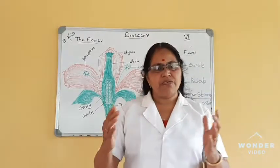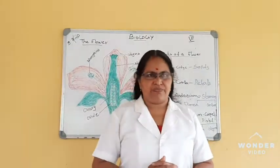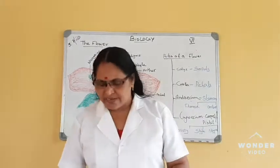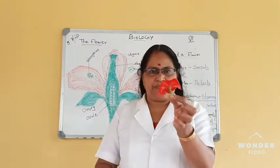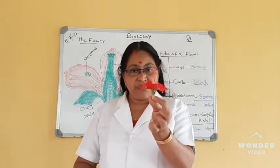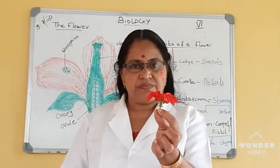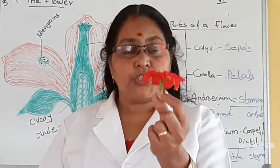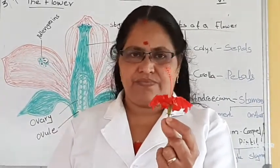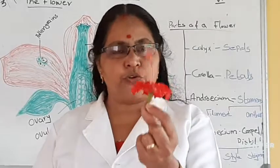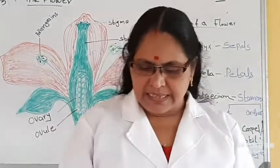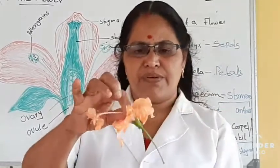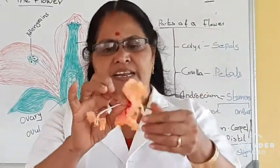You all have seen the different types of flowers. Here you can see some flowers. This is a flower — can you name this flower? It is a hibiscus, or shoe flower, also called China rose. This is another type of hibiscus. This is also a hibiscus, but it is somewhat different. This is another type.